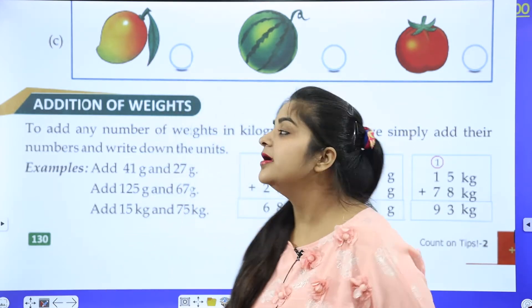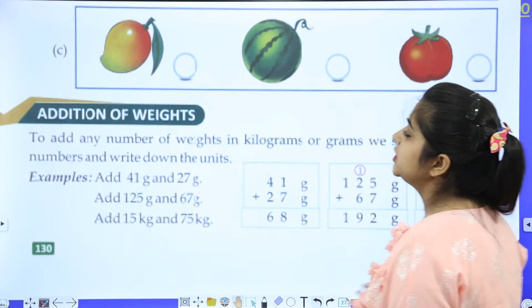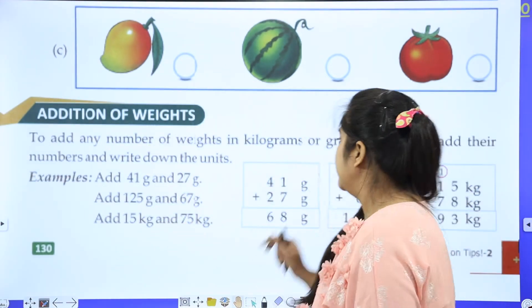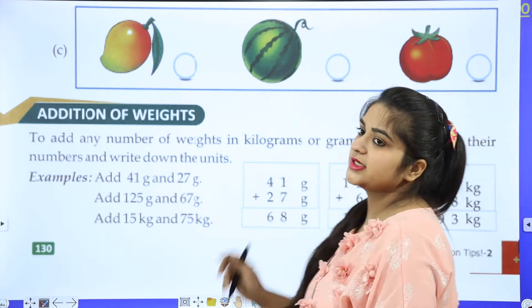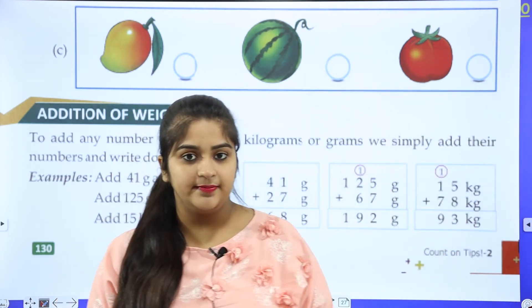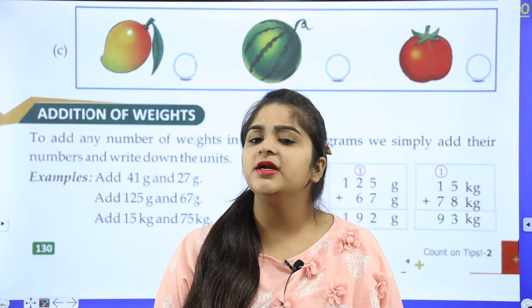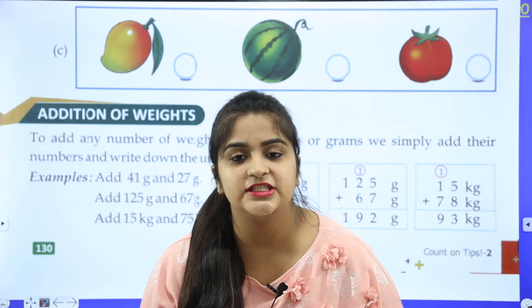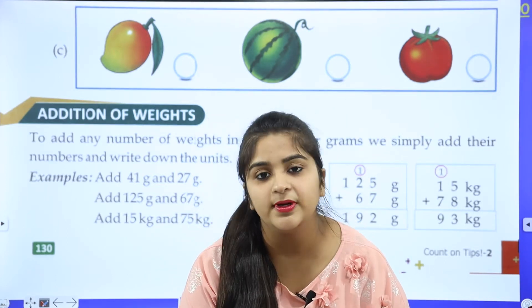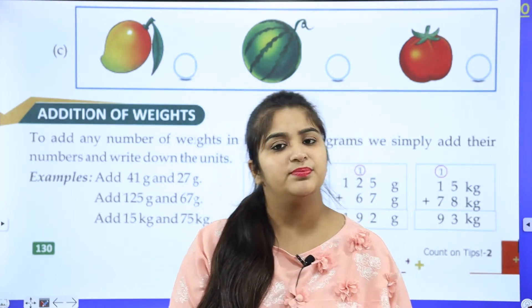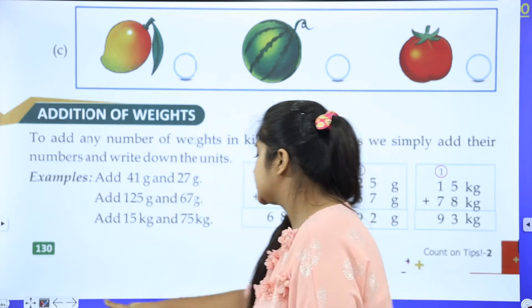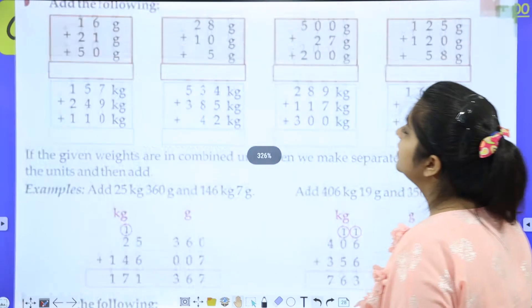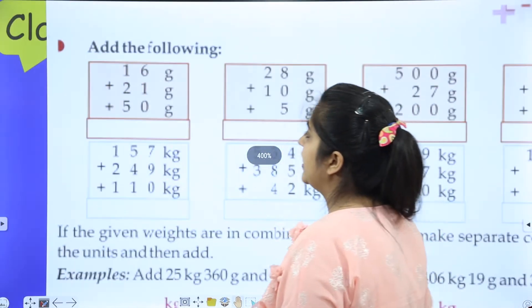Now, what do we do? We will learn addition of weights, how to add them. Simple. Kg and grams can be written above or after digits. If you have written on the side, you copy them below. And if you have written above, then you copy them above. Okay, so let's start. I have opened the page here. Add the following.